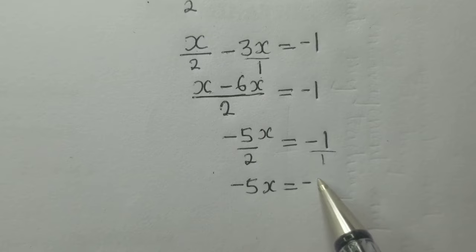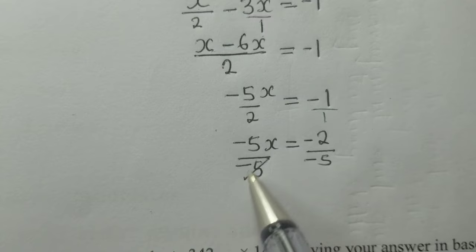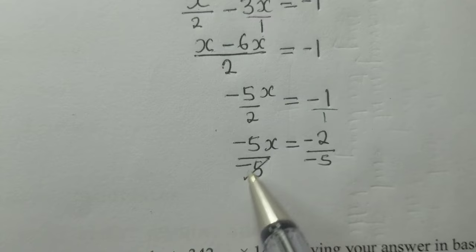We divide by -5 on both sides. When we work this out, we remain with x = 2/5. This is our solution. Thank you so much for watching.